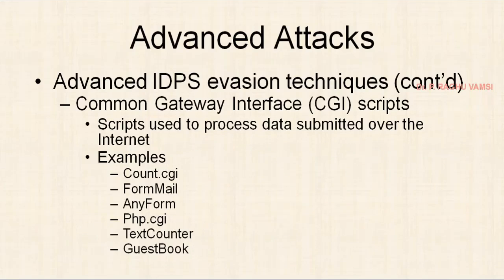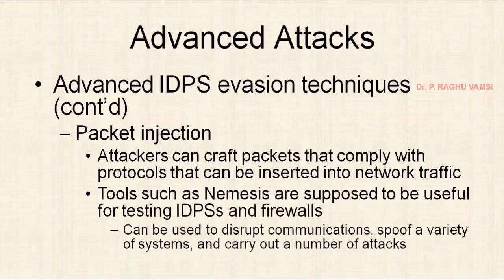Common gateway interface scripts — CGI scripts are usually used for connecting to the gateways, especially in the case of web applications. Scripts used to process data submitted over the internet like count.cgi, frommail, anyform, thp.cgi — which are most commonly used configuration scripts in web servers. Packet injection — attackers can craft packets that comply with the protocol and inject them into the traffic. For this, you may use a tool called NetWox (N-E-T-W-O-X). NetWox is a tool which supports more than a hundred wide variety of packet fabrications — including from ICMP, ARP to IP. I will post another video on NetWox and how to use it. Tools such as Nemesis are supposed to be useful for testing the IDPS and firewalls.